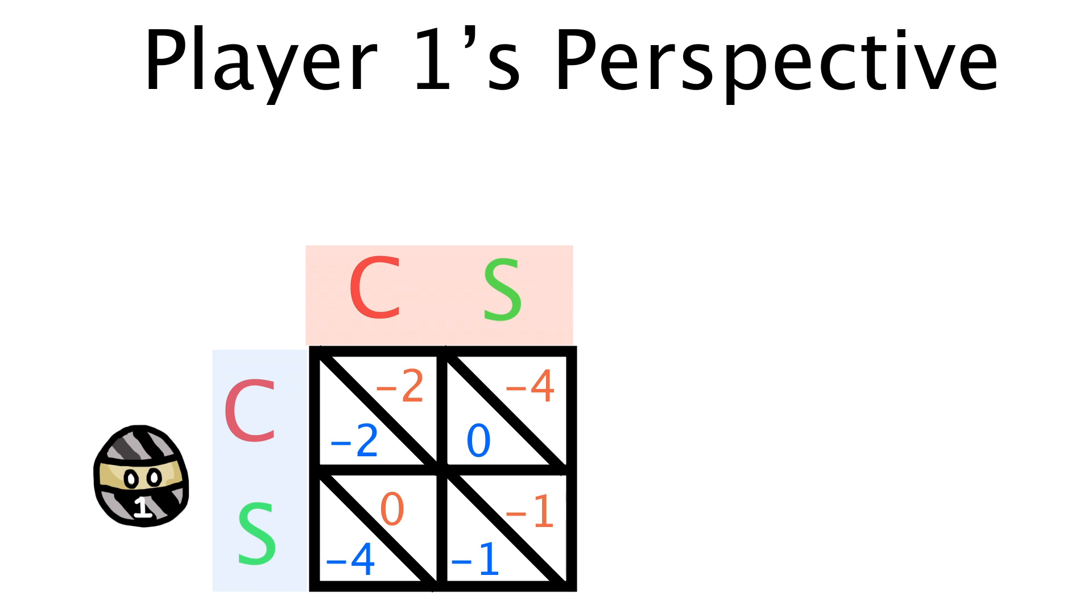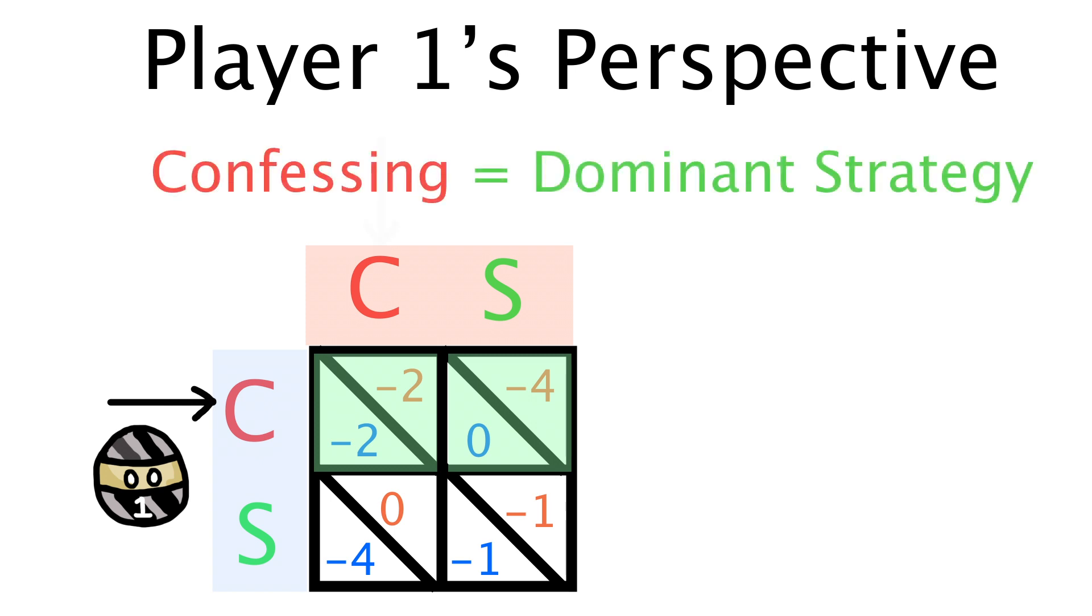Now, let's analyze the possible moves of each player. Let's look at this through player one's perspective. If player two stays silent, the ideal move for player one would be to confess, as he would get set free. And if player two confesses, then player one should ideally confess to save himself from getting a four-year sentence. As you can see, no matter what move the opponent makes, confessing is always the optimal move or the dominant strategy for player one.